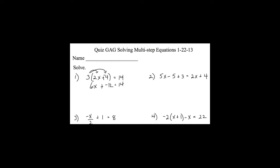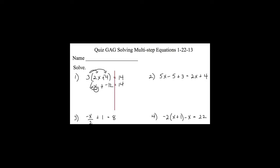My next step is to combine like terms — we can only combine on one side at a time. On the left I have an x term and a number term, so I can't combine those. On the right I just have a number by itself, so I can't combine like terms on either side. Next I check for variables on both sides: there's a variable on the left but nothing on the right, so I don't need to move variables.